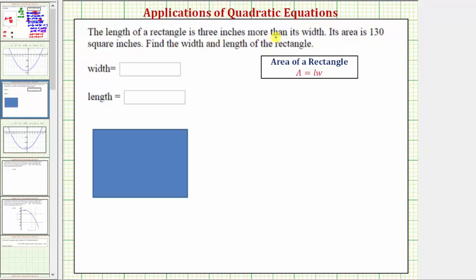The length of a rectangle is three inches more than its width. Its area is 130 square inches. Find the width and the length of the rectangle.